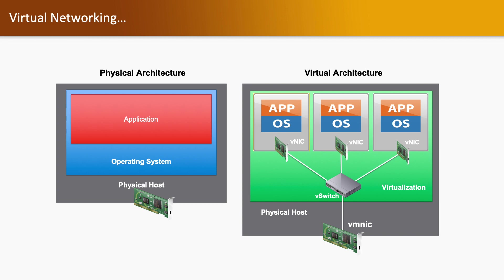Now we will talk about virtual networking. In a physical architecture, we have a physical server with physical network adapters attached. That physical network adapter assigns all bandwidth and all resources to that particular operating system. But in virtual architecture, we use a virtual network adapter called VMNIC, which is attached on the physical host. That VMNIC is further attached with a virtual switch in the virtualization layer, and that is further assigned to the virtual machine in the form of a VNIC, also known as a virtual NIC.